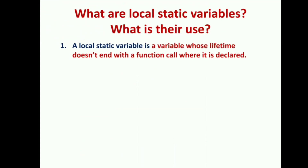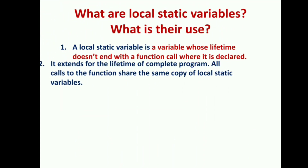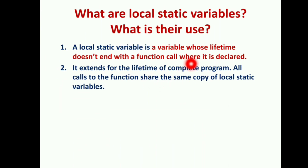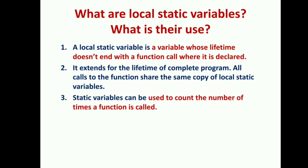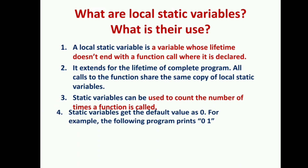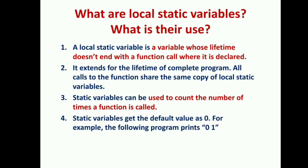What are local static variables and what is their use? A local static variable is a variable whose lifetime doesn't end with the function call where it is declared — it extends to the complete program. All calls share the same copy of the local static variable. Static variables can be used to count the number of times a function is called, and they get a default value of zero, so the output would start from zero.